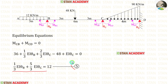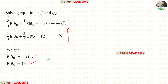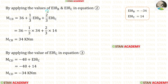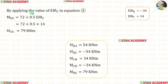Now let us use the calculator and solve equation number 1 and equation number 5. After solving in the calculator, we get EI·theta B and EI·theta C. If you do not know how to solve two equations in the calculator, see the description below for a link to a video. Applying the values of EI·theta B and EI·theta C in equation 2 gives MCB, applying EI·theta C in equation 3 gives MCD, and applying EI·theta C in equation 4 gives MDC. We have now calculated all the moments.